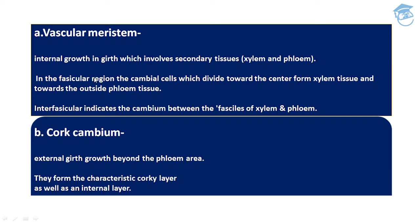In the fascicular region, the cambium cells divide towards the center and form xylem tissue, and towards the outside they form phloem tissue. Interfascicular cambium indicates a cambium that is between the fascicles of xylem and fascicles of phloem — it is present between xylem and phloem. Then comes cork cambium: it is the external girth grown beyond the phloem area, forming the characteristic corky layer as well as an internal layer.